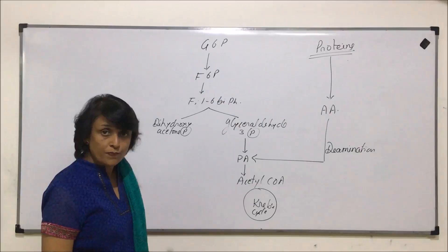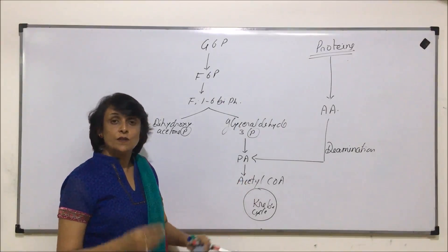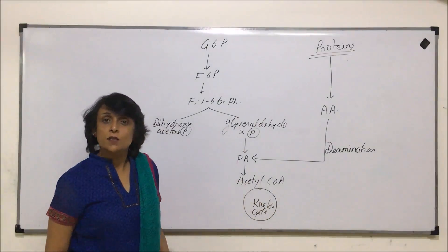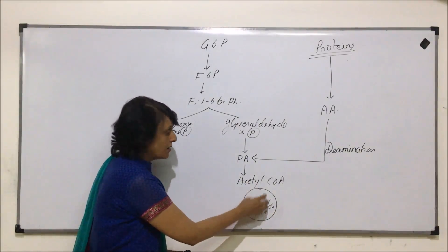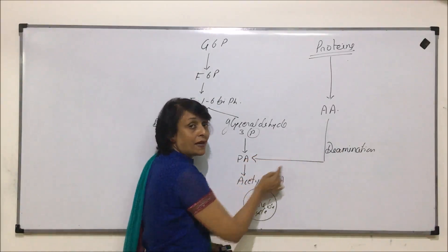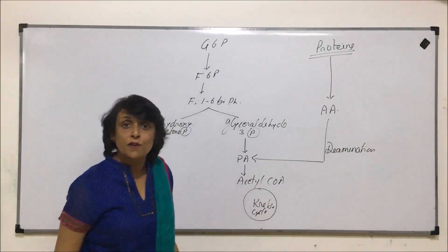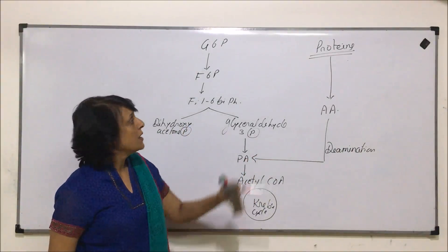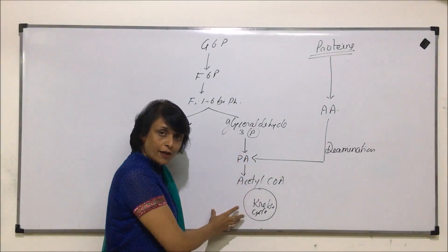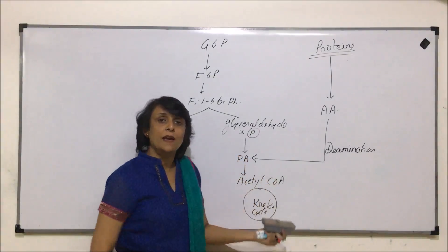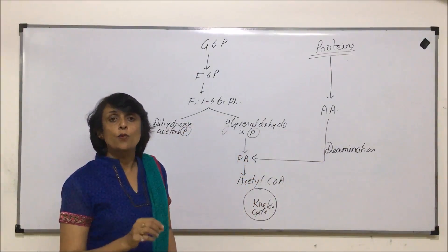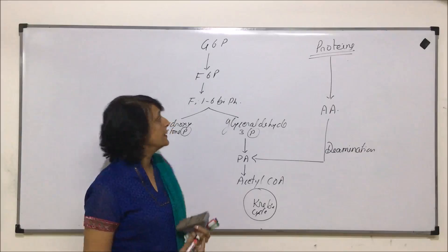Pyruvic acid when it changes into acetyl coenzyme A, here we get 1 NADH2. 1 NADH2 gives us 3 ATPs. And then 1 Krebs cycle gives us 12 ATPs. So 12 from here and 3 from here, this will give us 15. But the condition is if we are getting only 1 amino acid changing into pyruvic acid. If a question comes that protein gives you 10 amino acids, you count first with 1 amino acid that is 15, multiply it with 10. So that is the ATP number if your protein is giving you 10 amino acids.